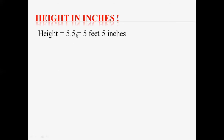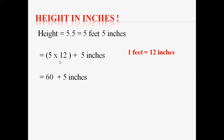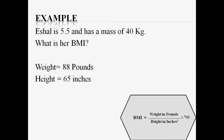Now let's convert the height into inches, because we are provided the height in feet. The height given is 5 feet 5 inches. One foot contains 12 inches, so simply multiply 5 by 12, which gives 60. Then add the remaining 5 inches to get 65 inches. So 5 feet 5 inches equals 65 inches. Now we have the measurements in the same units as required by the formula: 88 pounds and 65 inches.